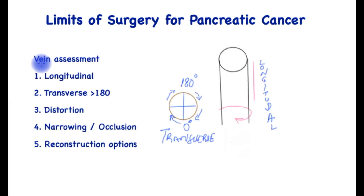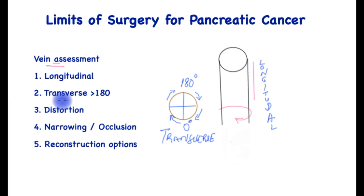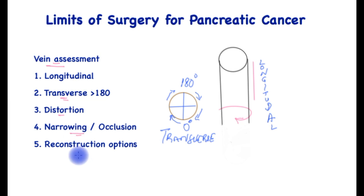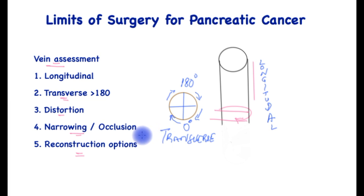Surgeons particularly want to assess the veins and arteries shown earlier to determine their involvement with the cancer, done in a thoughtful and organized way. For veins, surgeons assess what longitudinal section in centimeters is involved, and the circumferential involvement in degrees — 0 to 180 degrees means 50% of the vein is involved, and 360 degrees means the whole vein is involved. Assessment is also made for distortion, narrowing or occlusion, and whether reconstruction can be undertaken — removing a section of vein and reconstructing it directly or with a graft. Veins generally lend themselves to removal and reconstruction much more so than arteries.